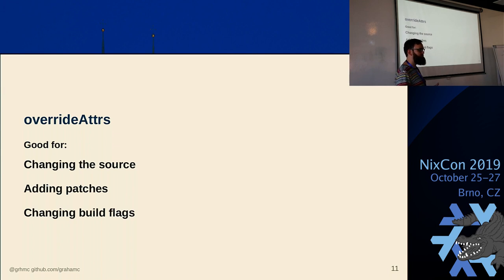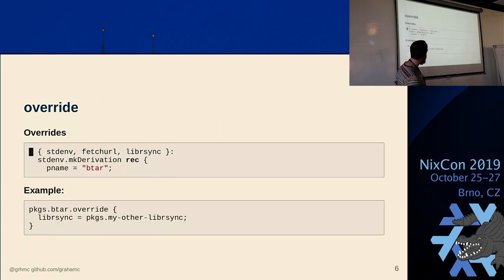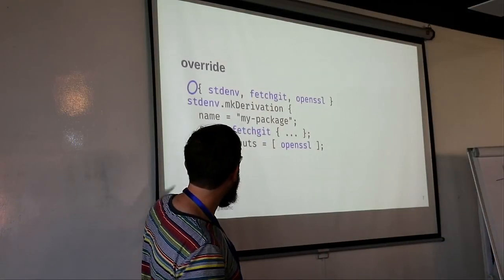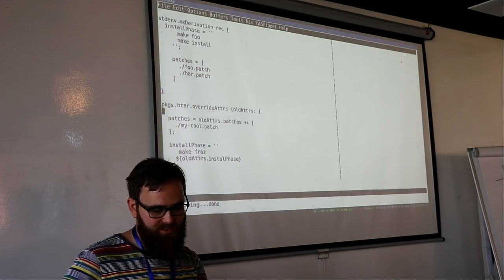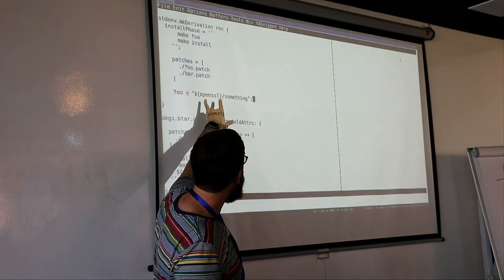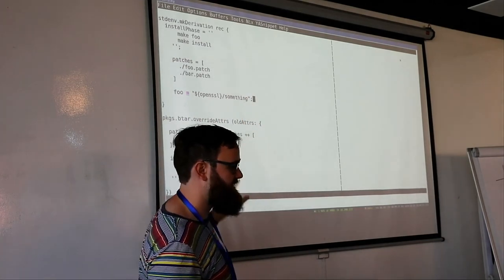overrideAttrs is very good for changing sources, very good for adding or removing patches, and good for manipulating build flags or environment variables for the build. Clarification: `.override` can only touch the top-level function parameters. It will change those. It cannot reach inside the derivation attribute set — for example, if you had `foo = openssl + "/something"`, it would update openssl but would not change `/something` — that's out of its scope.